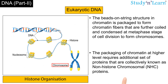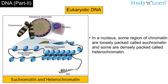The packaging of chromatin at a higher level requires an additional set of proteins collectively known as non-histone chromosomal proteins, or NHC proteins. In a nucleus, some regions of chromatin are loosely packed, called euchromatin, and some are densely packed, called heterochromatin.